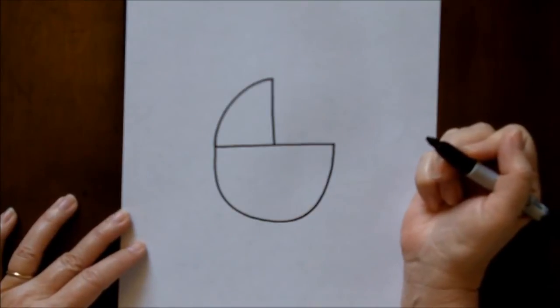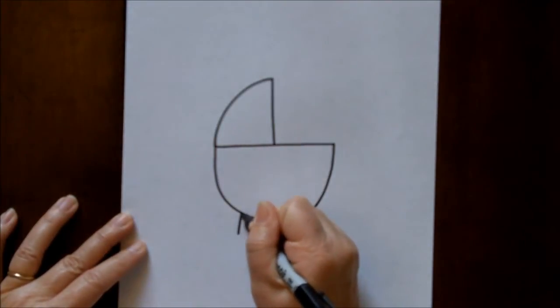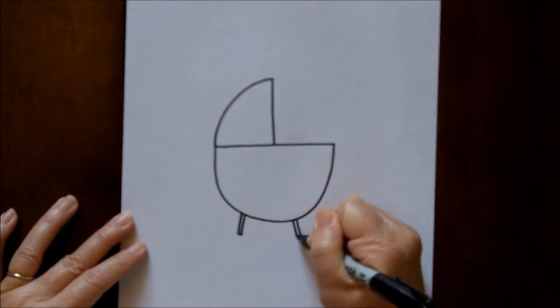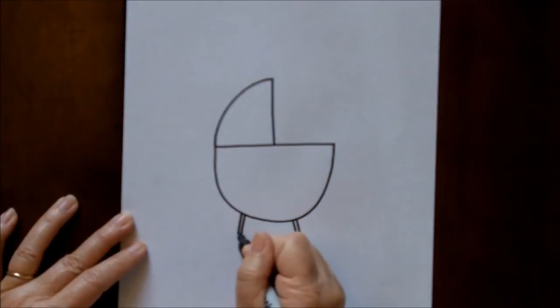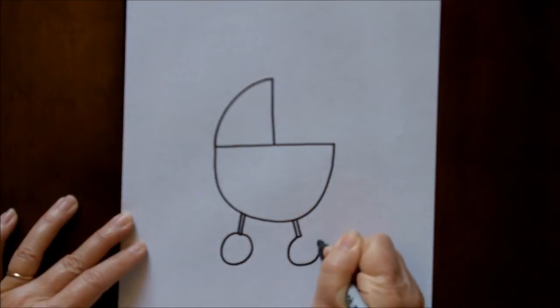Now let's put some wheels on it. Two straight lines down, two straight lines down. Then at the end of those lines, you're going to make a circle at the end of each set of lines.